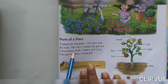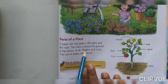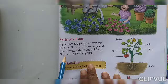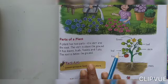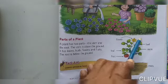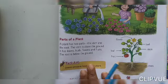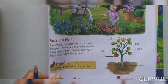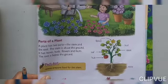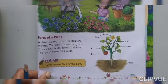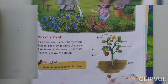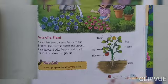The plant has leaves, flowers, and fruits. The root is below the ground. You may find here the different parts of the plant: fruit, leaf, flower, stem, and roots. Look at and observe it properly in your textbook.